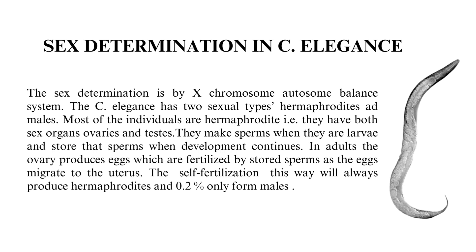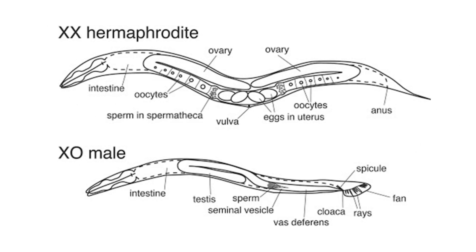Self-fertilization this way will always produce hermaphrodites, with only 0.2% forming males. When these males fertilize hermaphrodites, equal numbers of hermaphrodites and males are produced, because the sperm from males have a competitive advantage over the sperm stored in the hermaphrodites. Genetically, hermaphrodites are XX and males are XO.